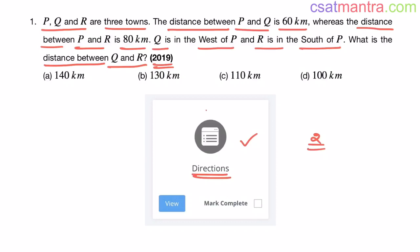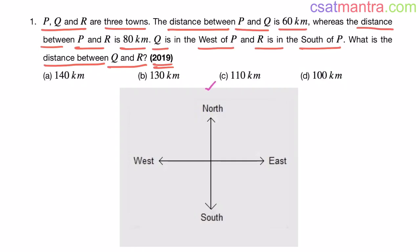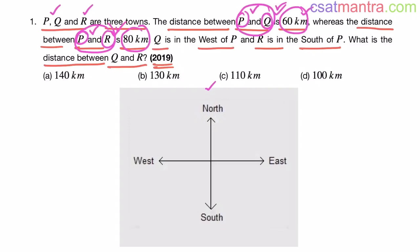These are very easy questions — in 30 minutes you can master this lecture and you cannot miss the questions from it. Now, these are the standard directions: north, south, west, east. P is common in both terms. Distance of Q with respect to P is 60 kilometers, and distance of R with respect to P is 80 kilometers. So I am taking P as the center. The first thing you should do is fix the center — the center is the point which appears in most of the cases.